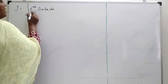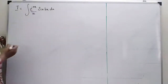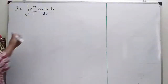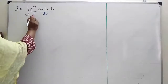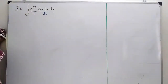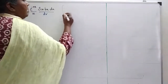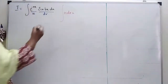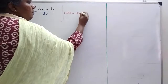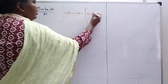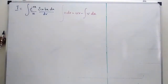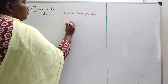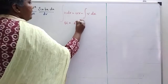When I see this, I should consider e power minus ax as u and sin bx dx as dv. The formula is: integral u dv is equal to uv minus integral v du. Here my u is e power minus ax.